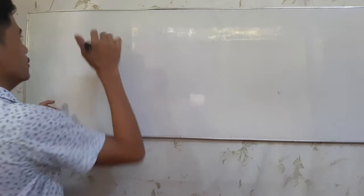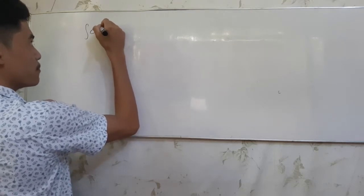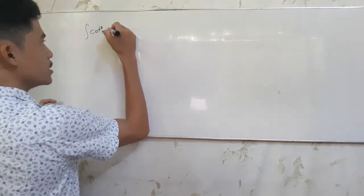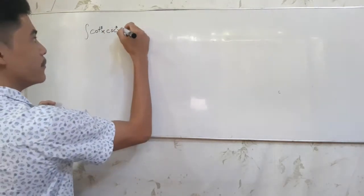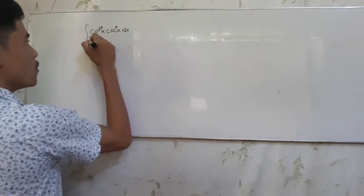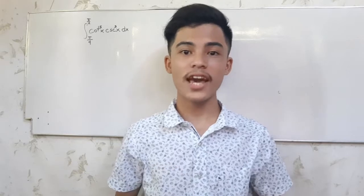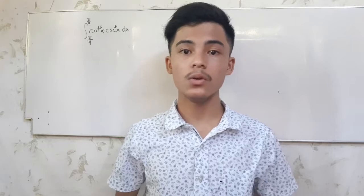Let's try some trigonometric functions. Suppose we have this definite integral of cotangent x to the fifth power multiplied to cosecant x to the third power, dx, from the interval of pi over 4 to pi over 2. What do you think will be the first step? Let's simplify it first. Because this function seems to have a large value and we know some trigonometric identities to help us simplify it.